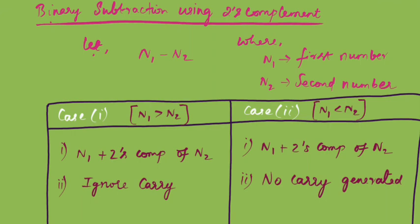Binary subtraction using two's complement. Same as before, we consider n1 minus n2, where n1 is the first number and n2 is the second number. Here we also have two cases, as we discussed using one's complement. Case 1 is if n1 is greater than n2, whereas Case 2 is if n1 is less than n2.